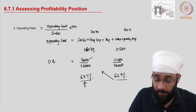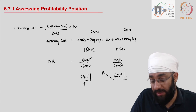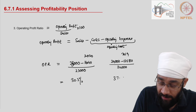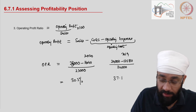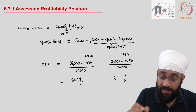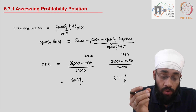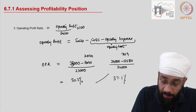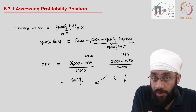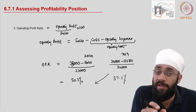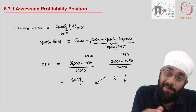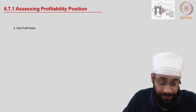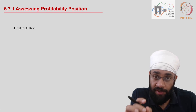For 2020, the operating profit ratio comes out to 30.3%, and for 2019 it is 37.1%. Operating profit is going down — not a good situation. We've seen gross profit going down, operating cost going up, so naturally operating profit has to go down as well. Let's now look at the net profit ratio.